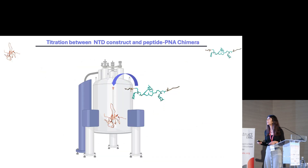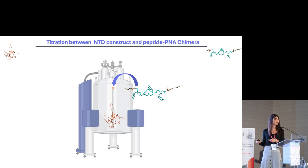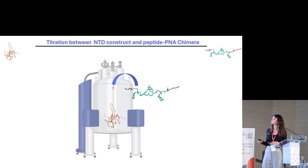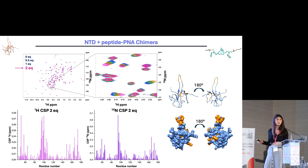We performed the same titration with this new chimera and observed the same chemical shift perturbation for some residues, but the amount of chimera required was lower compared to the peptide — from 9 equivalents down to 2 equivalents of ligand. I plotted the chemical shift perturbation against the residue number to highlight the affected region of the protein.